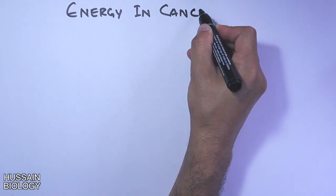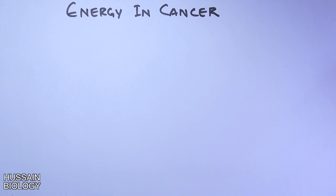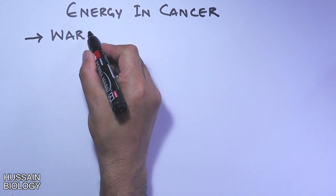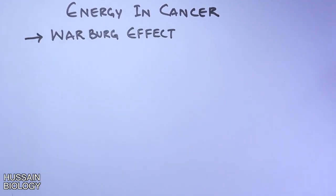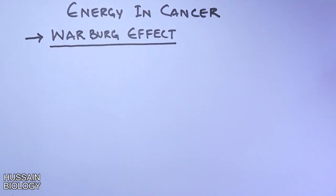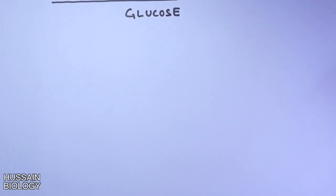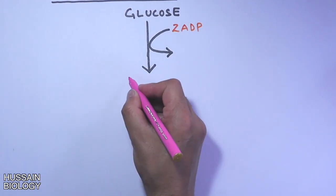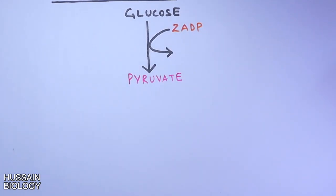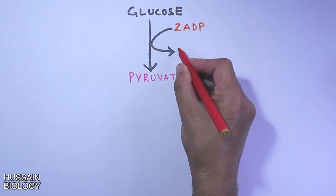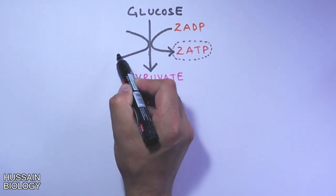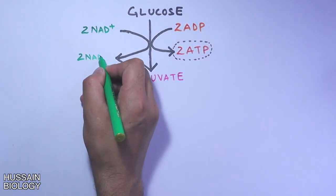Another factor to consider is the energy metabolism in cancer cells. These cells harness energy through the Warburg effect, which is lactic acid fermentation whether oxygen is present or absent. A glucose molecule enters the glycolysis pathway where it is oxidized into two pyruvate molecules, producing two ATP molecules, and NAD+ is reduced to NADH.